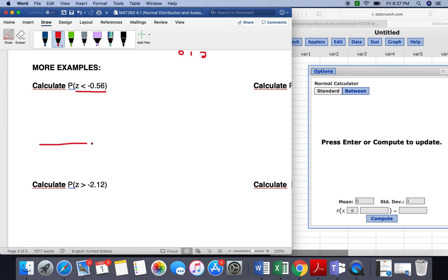So first off, we always want to draw our normal curve. And so always 0 in the middle for the mean, and we want to find negative 0.56. So that's going to be about here, and we're looking at less than.